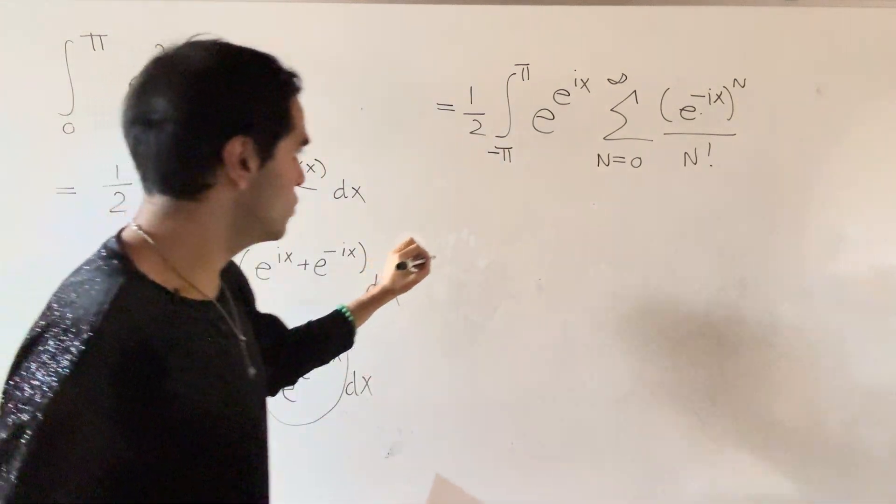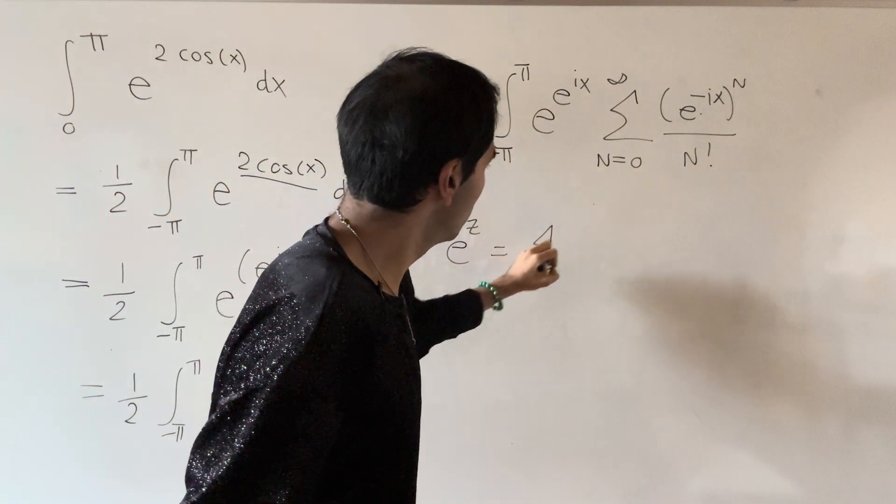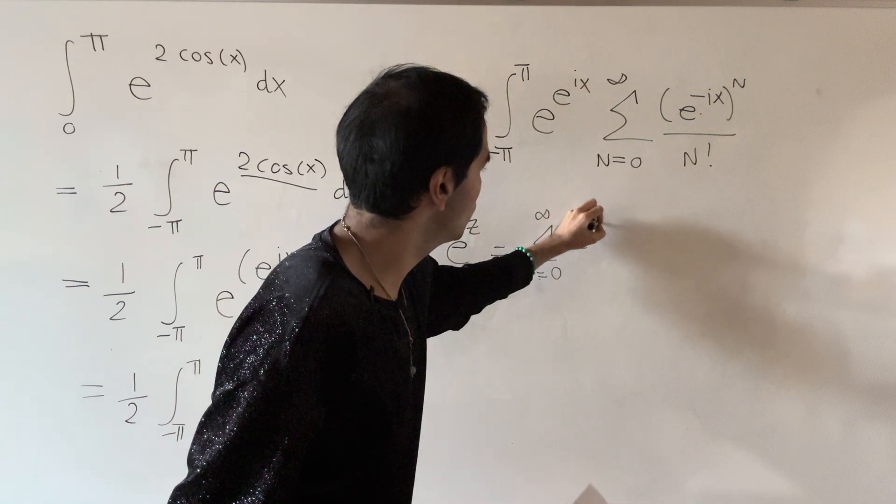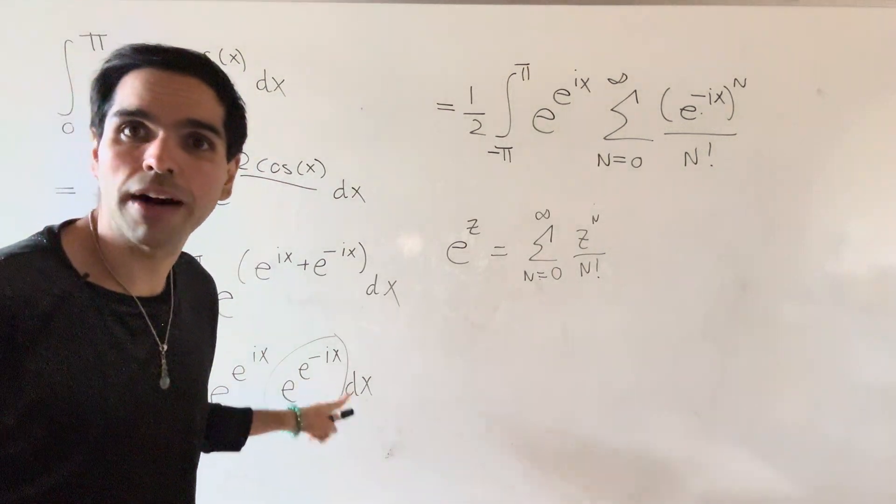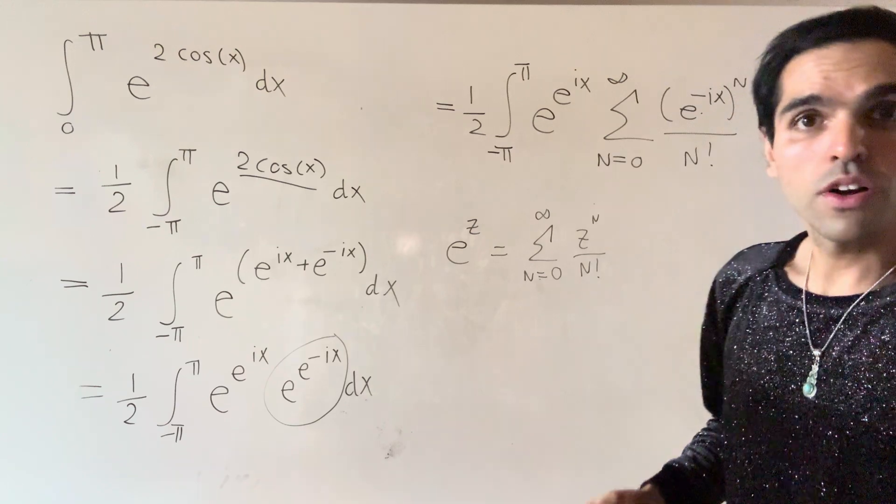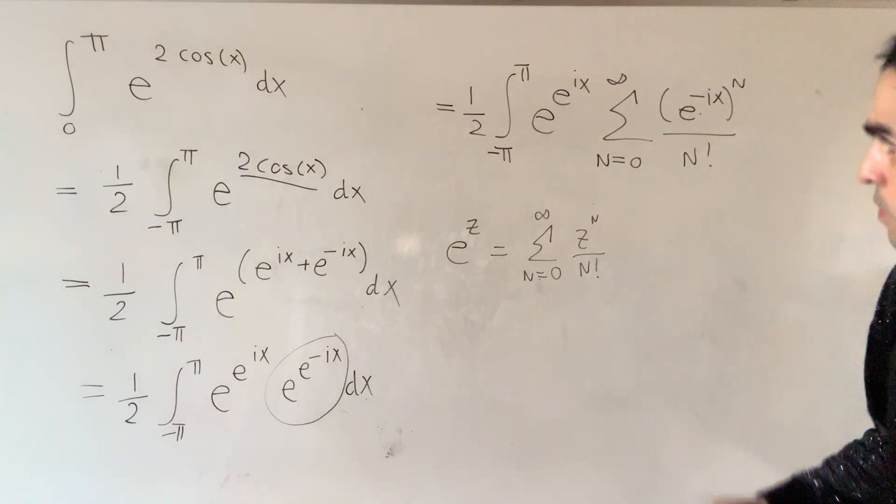So here, we just use the fact that e to the z is the sum from n from 0 to infinity of z to the n over n factorial, but with z being e to the minus i x. And since this radius of convergence is infinity, it's perfectly valid.